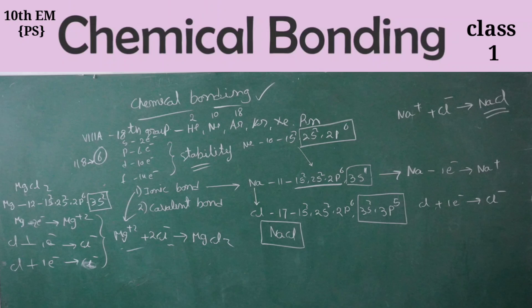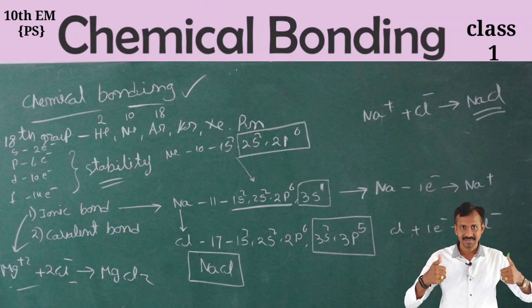Now, types of chemical bonding: mainly there are two types we will discuss — first one is ionic bond, second one is covalent bond. We will discuss these briefly here, and explain them in detail in the next class.